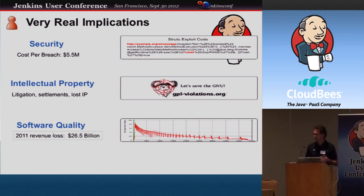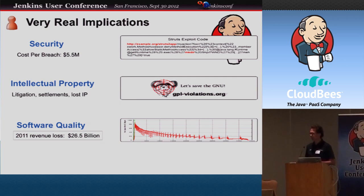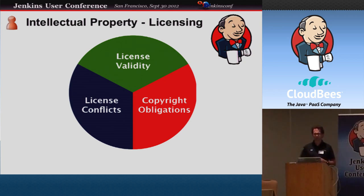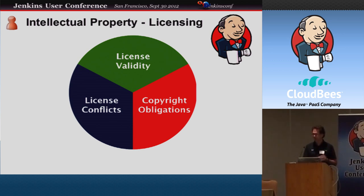There are similar things with intellectual property. There are organizations like GPL-violations.org that actively go after companies that violate the GPL — and arguably they should, since the authors of the software wanted a GPL, so it should be enforced. And similarly, there are huge losses on software quality. With licensing, while it looks easy on the surface with the component-based approach, it's not that easy. There are all these different licenses, and that's already complicated enough. But there are also conflicts between those different licenses and obligations in terms of copyright.